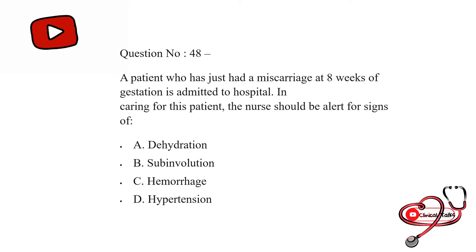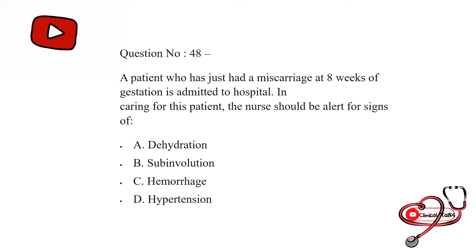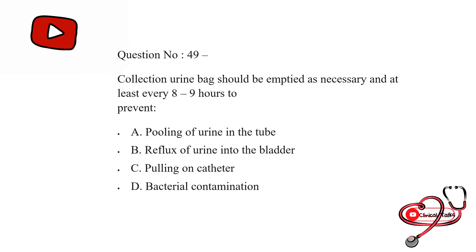A patient who has just had a miscarriage at 8 weeks of gestation is admitted to the hospital. In caring for the patient, the nurse should be alert for signs of: option first: dehydration; second: uterine involution; third: hemorrhage; last: hypertension. The correct answer is C — hemorrhage.